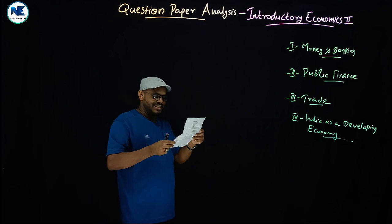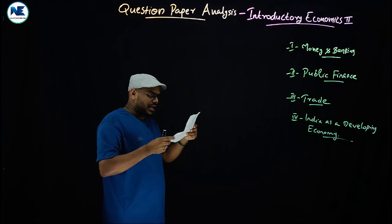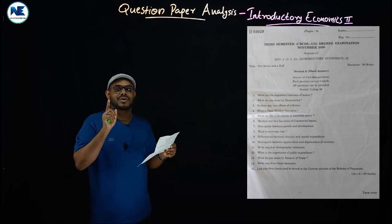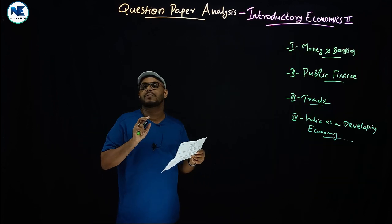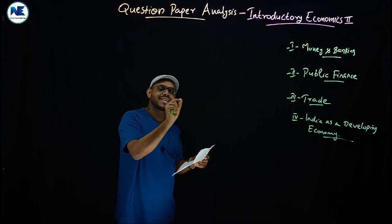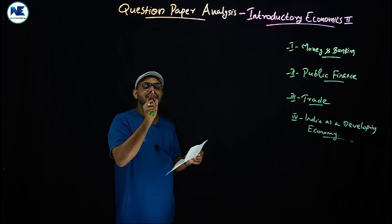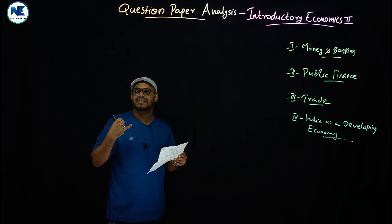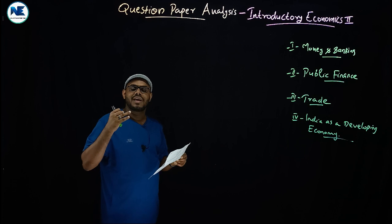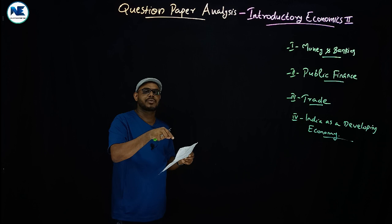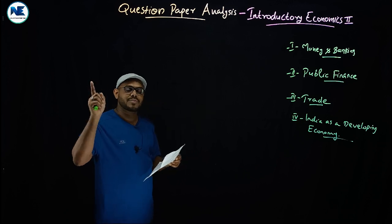The sixth question: mention any two functions of commercial banks. This is from Module 1. Commercial banks have primary functions — accepting deposits and lending of money — and secondary functions including general utility services and agency functions. For a five-mark answer, write a paragraph-type response listing the functions.